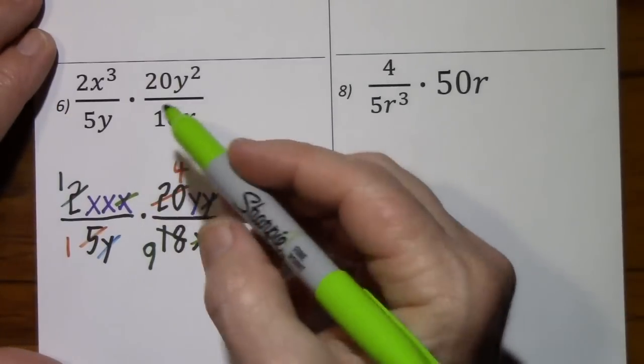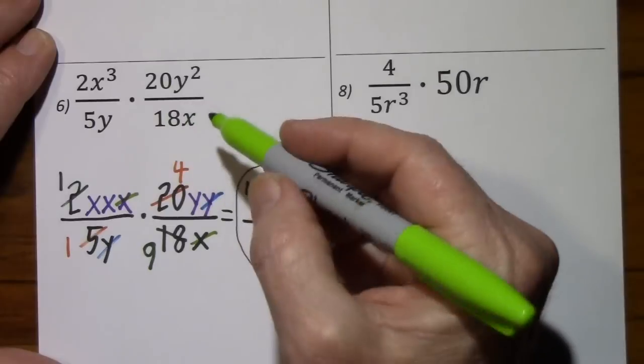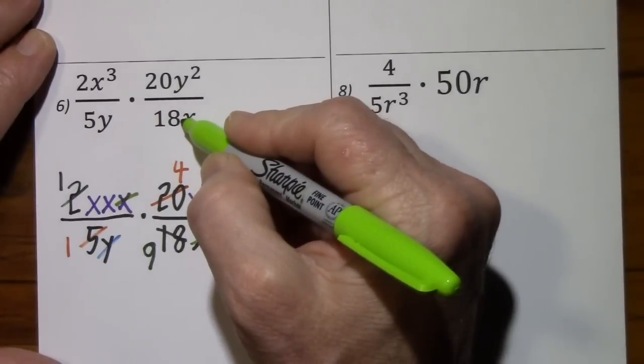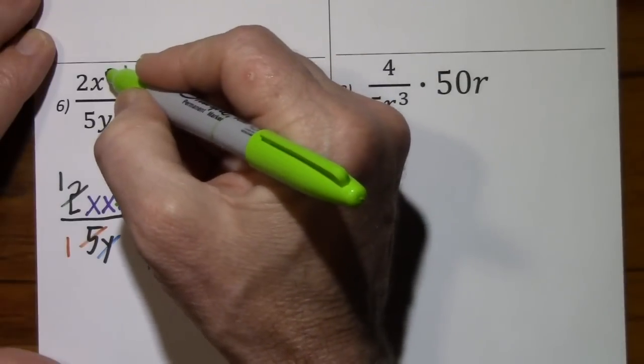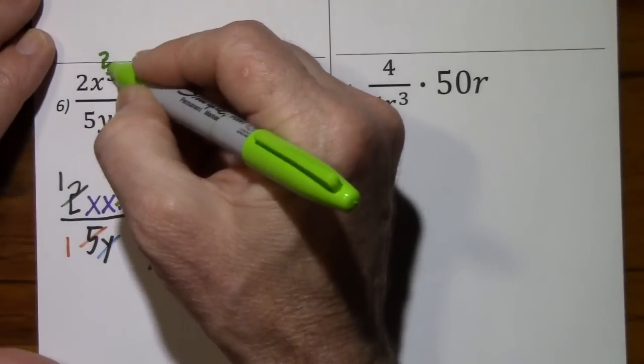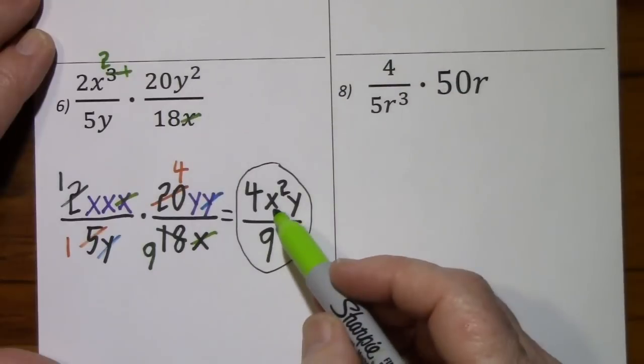I'll just show subtracting exponents briefly. x to the first is gone, subtract one, you're left with x squared. See, we have x squared.